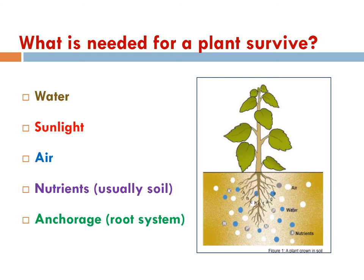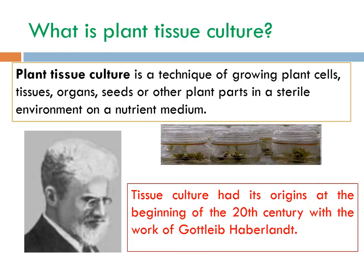In the soil system, plants in their natural environment absorb nutrients. Plant tissue culture is a technique in which we can provide nutrients to plant tissues, organs, seeds, or other parts of plants in order to grow them artificially.